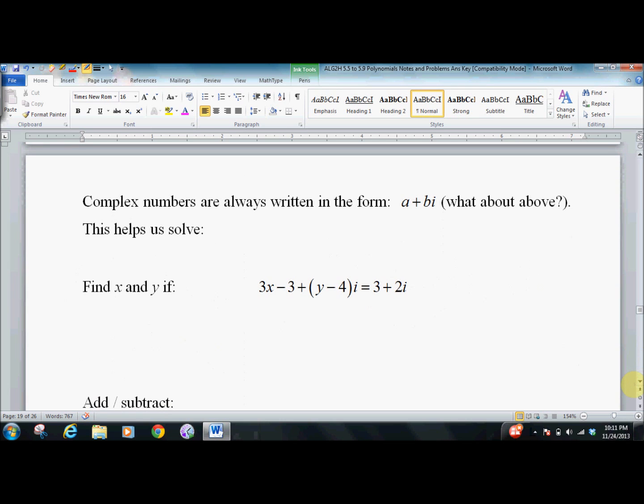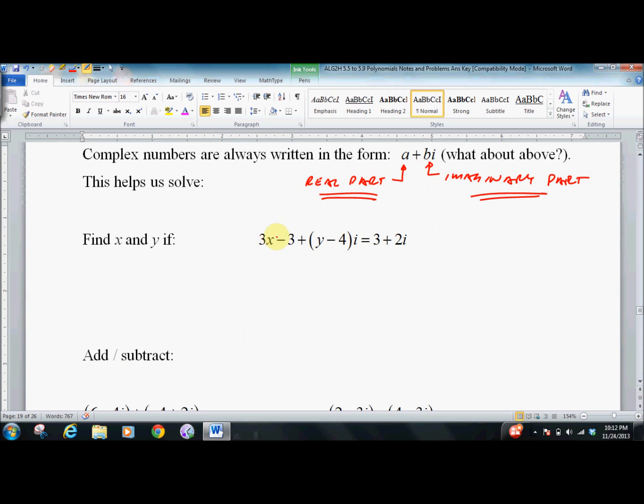They're always written in the complex form. So up above you saw 4i. Well, that's 0 plus 4i. And we call this the real part. This the imaginary part.